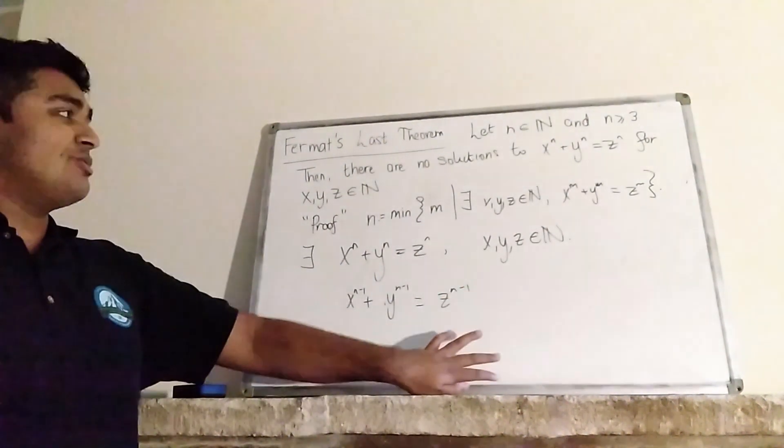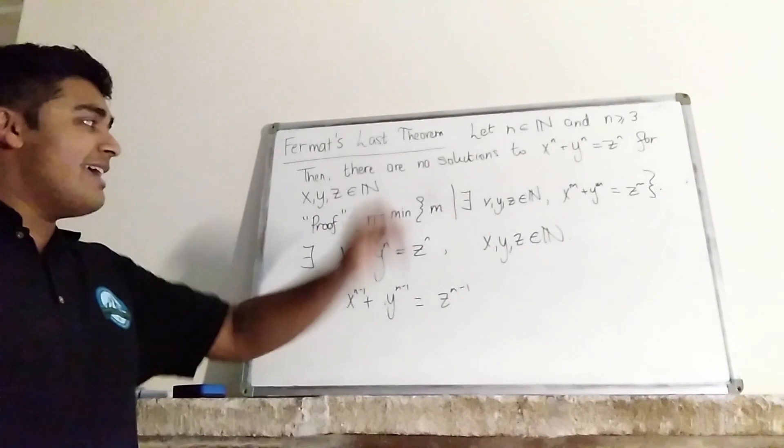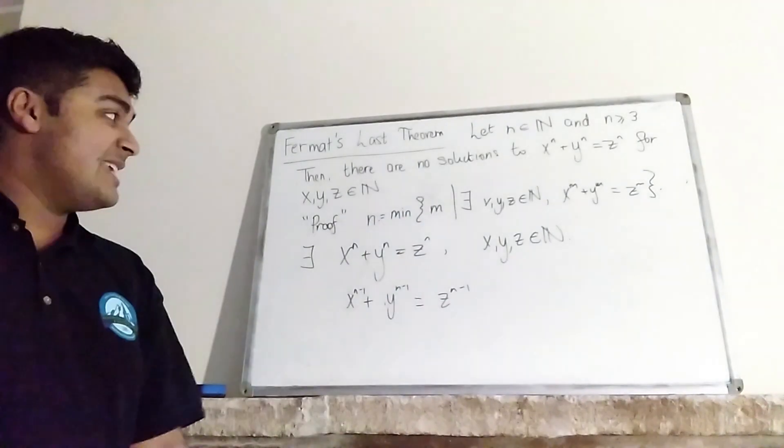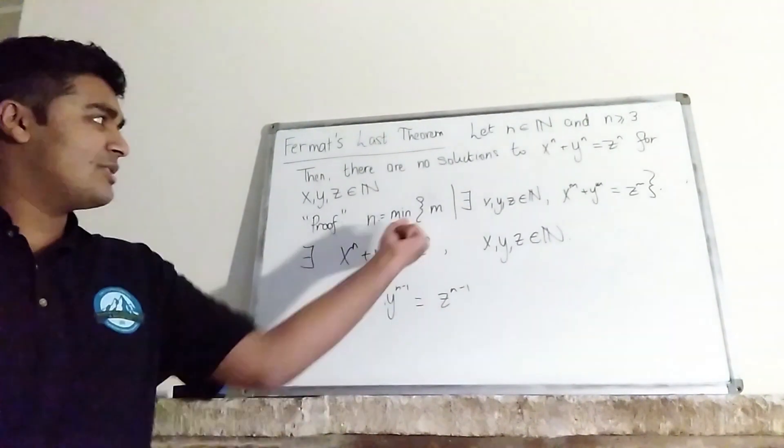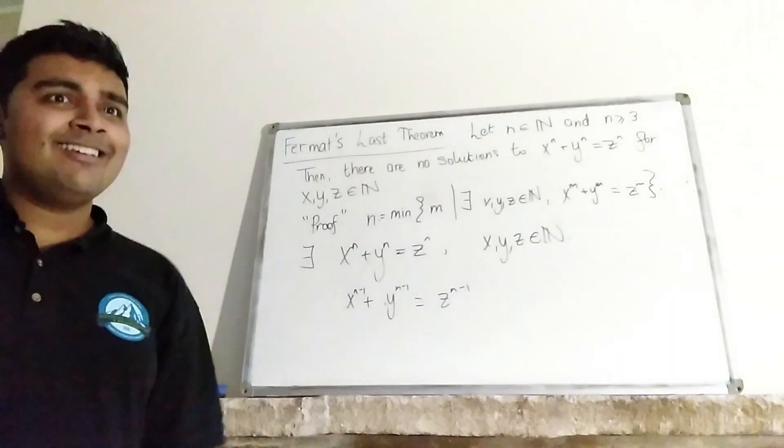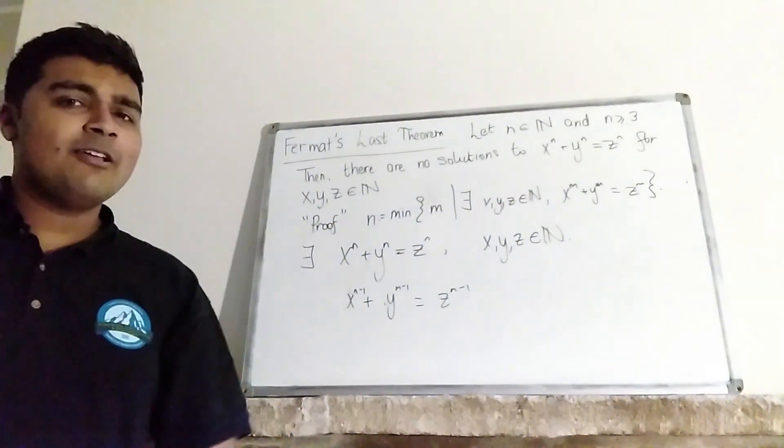So we found another solution but by definition n was the smallest integer, positive integer with this property. But now I've claimed that n-1 is also in this set here which is obviously a contradiction because n-1 is less than n and n was the smallest element in this set by definition.